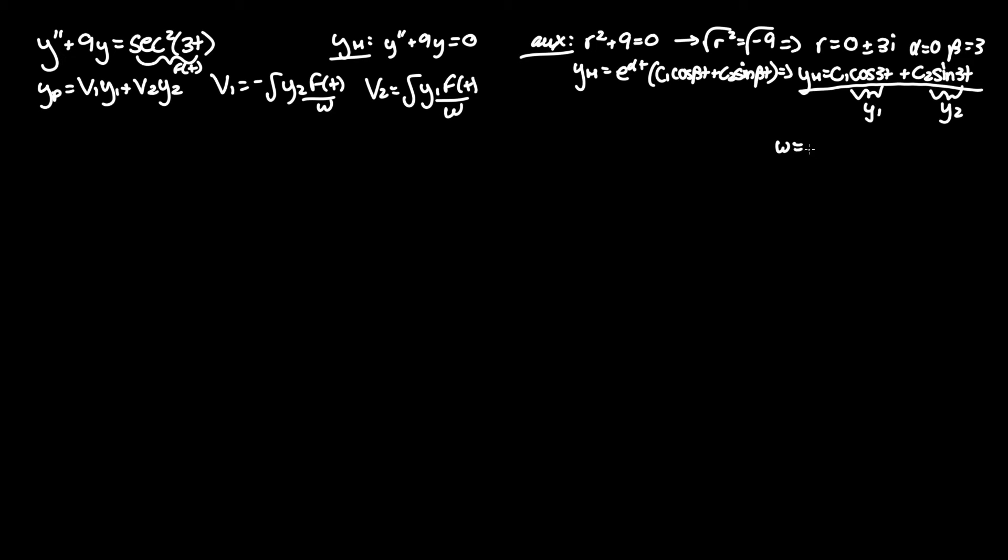As you know from linear algebra, Wronskians used to find out whether two functions are linearly independent. So you need to find their derivatives as well. And with their determinant, you can see y1 y2 prime minus y1 prime y2 is what you need to do to find Wronskian. We already said from our homogeneous solution that y1 is cosine of 3t and y2 equals sine of 3t.